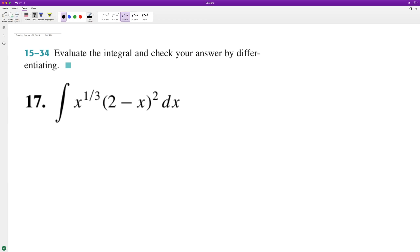So what we'll do here is before we integrate, we'll multiply everything through. So x raised to one third, then we'll end up with four minus four x plus x squared.